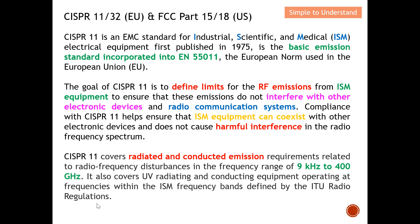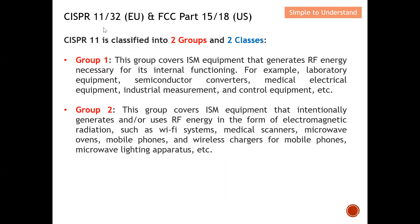CISPR 11 can be classified into two groups and two classes. The first group covers ISM equipment that generates RF energy necessary for its internal function — meaning the device does not actually radiate outward in order to function. Examples include laboratory equipment, semiconductor converters, medical electrical equipment, and industrial management and control equipment.